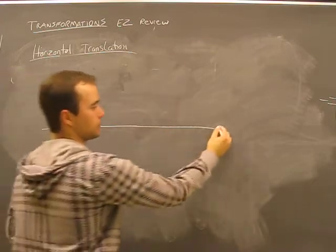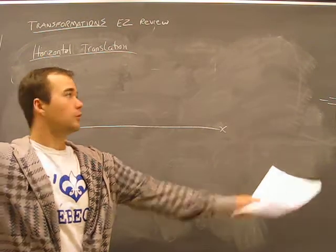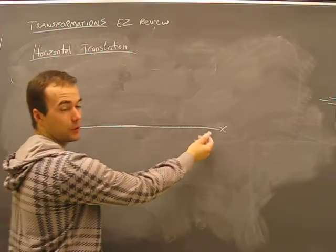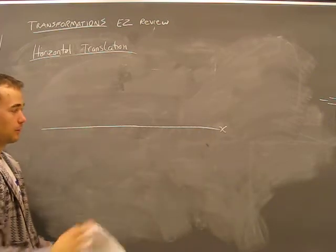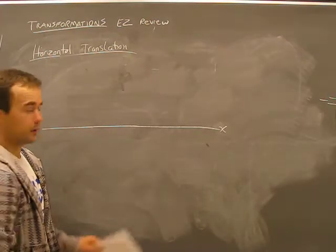This is also our x-axis. When we're dealing with horizontal translations, we are messing with the x-axis. We're messing with the x part of the equation.